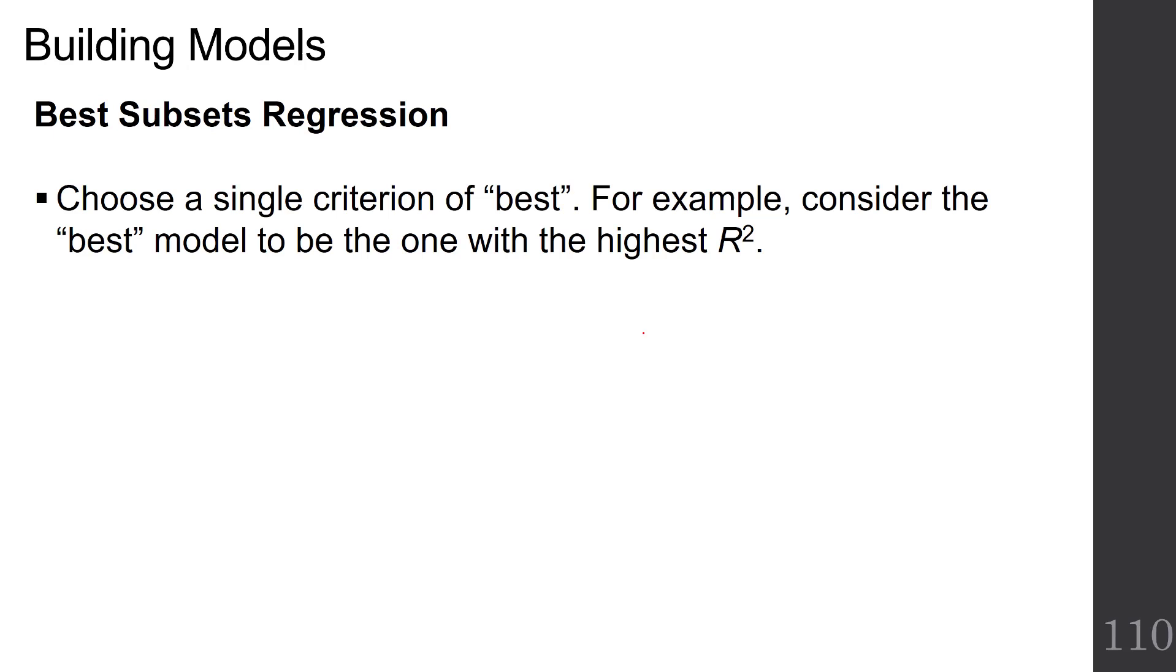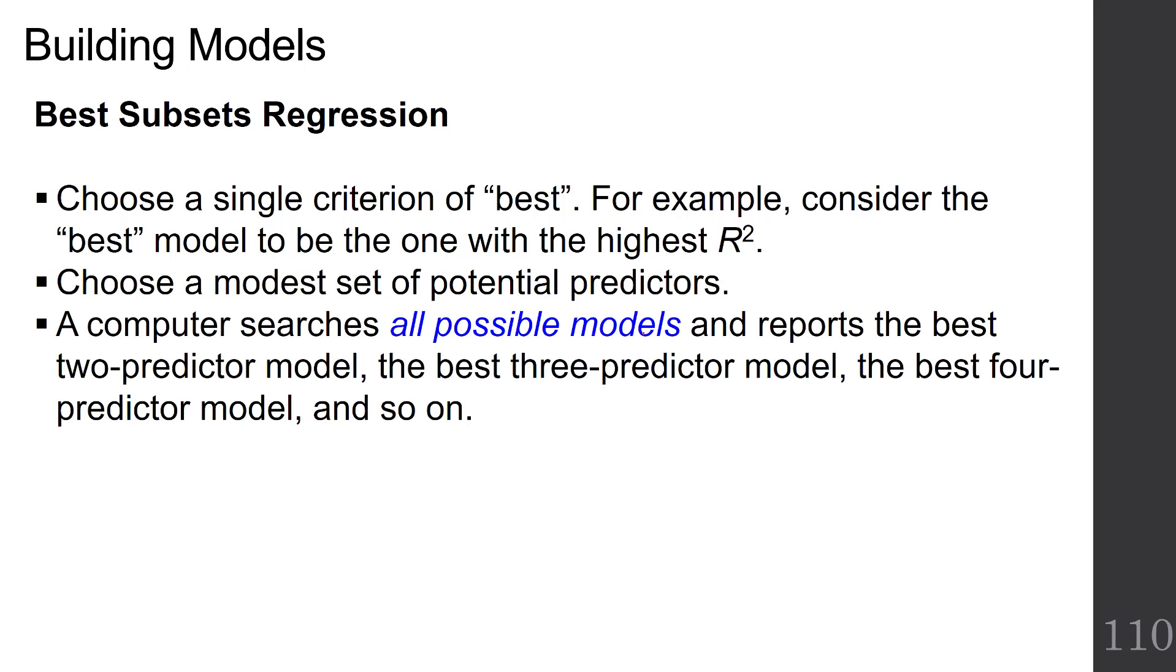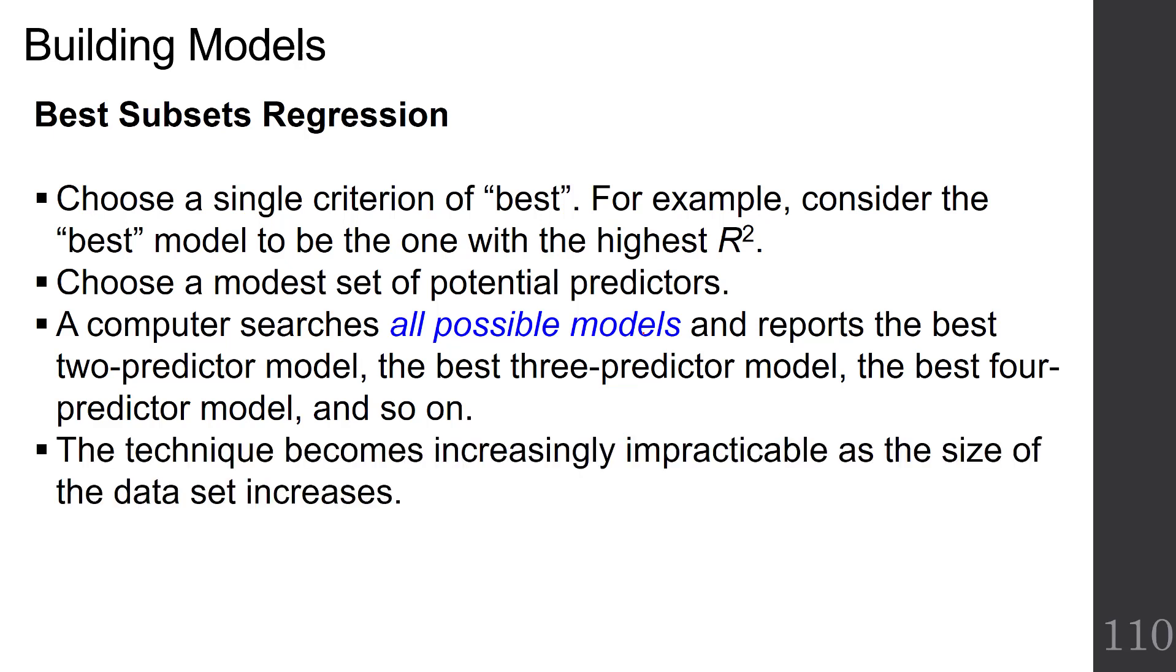So what's best subsets regression? Best subsets regression has you choose a single criterion of what is best. For example, you could tell the computer to choose the best model to be the one with the highest R-squared value. You choose a modest set of potential predictors, and then a computer searches all possible models and reports the best two-predictor model, the best three-predictor model, the best four-predictor model, and so on. The technique becomes increasingly impracticable as the size of the dataset increases.